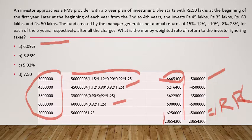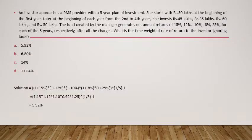The second question is similar, but instead of money-weighted rate of return, we are finding the time-weighted rate of return (TWRR). In case of TWRR, we take the return for each period and factor in its impact. Since returns are the same — 15%, 12%, minus 10%, minus 8%, and 25% — we calculate: (1 + 15%) × (1 + 12%) × (1 − 10%) × (1 − 8%) × (1 + 25%).